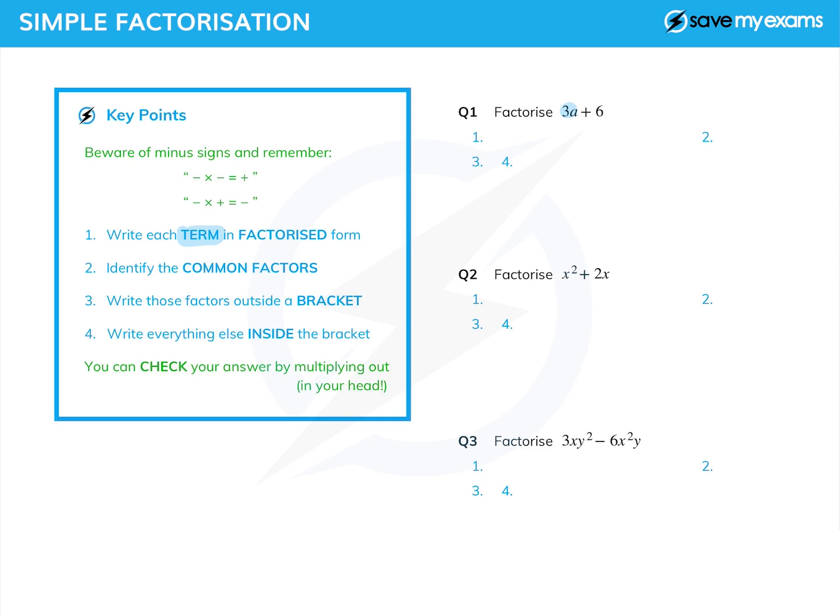Factorized has the word factor in it, and we are simply writing 3a as 3 times a, because factors are things that are timesed or multiplied together.